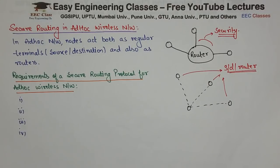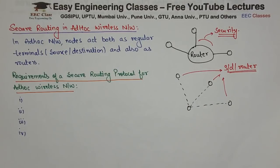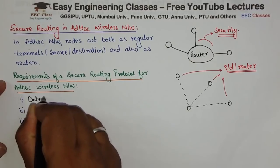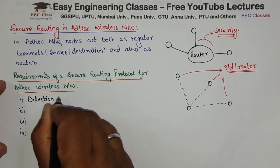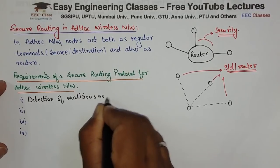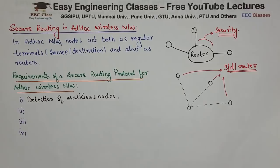Security is reduced, but if we use a secure routing protocol, there are certain requirements. What are they? The first requirement is the detection of malicious nodes. Attacks such as wormhole and blackhole attacks are caused by malicious nodes, so detecting these nodes is essential.